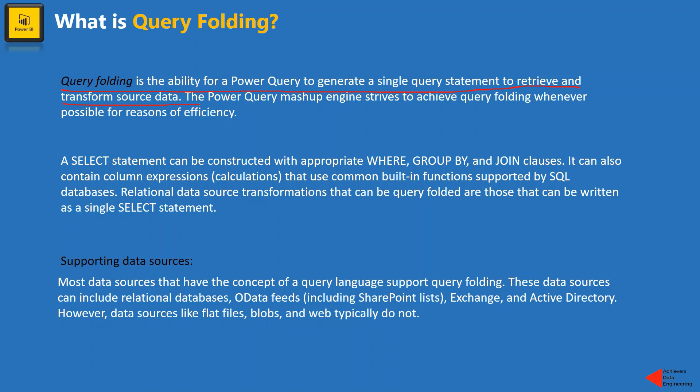As long as Power Query is able to conclude all transformations in a single SELECT statement, query folding will work. When we perform operations that Power Query cannot consolidate into a single SELECT statement, query folding will be disabled automatically. A single SELECT statement can include WHERE clauses, GROUP BY, joins, complex calculations, and common built-in SQL functions. Only when transformations are unrelated or cannot be sequentially expressed in one SELECT statement will query folding be disabled.